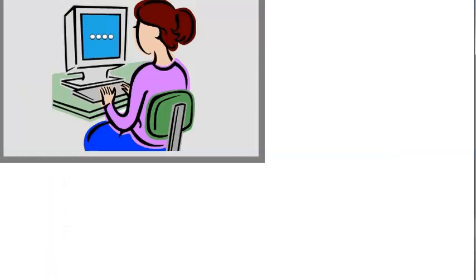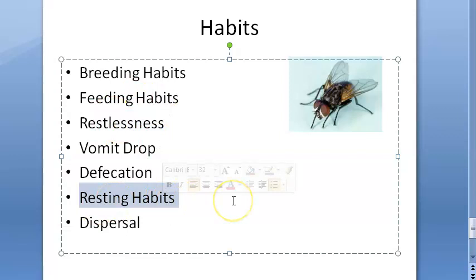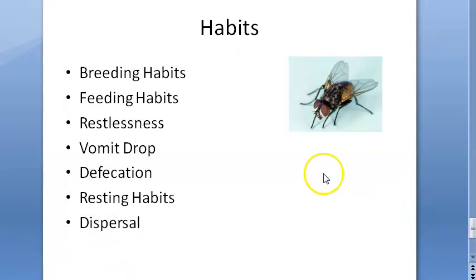House flies deposit bacteria on your food as well. Regarding resting habits, they rest on vertical surfaces and hanging objects. For dispersal, house flies normally remain close to their breeding places, but they can disperse up to four miles.